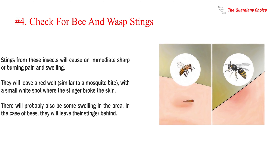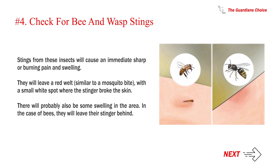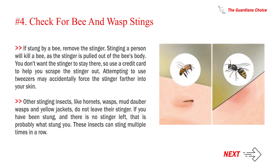Number 4: Check for bee and wasp stings. Stings from these insects will cause an immediate sharp or burning pain and swelling. They will leave a red welt, similar to a mosquito bite, with a small white spot where the stinger broke the skin. There will probably also be some swelling in the area. In the case of bees, they will leave their stinger behind. If stung by a bee, remove the stinger. Stinging a person will kill a bee, as the stinger is pulled out of the bee's body. You don't want the stinger to stay there, so use a credit card to help you scrape the stinger out. Attempting to use tweezers may accidentally force the stinger farther into your skin.